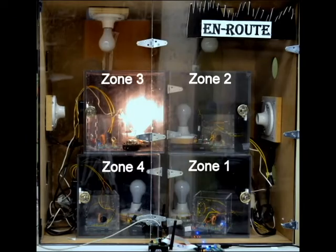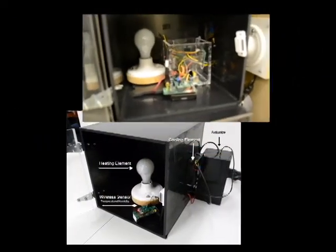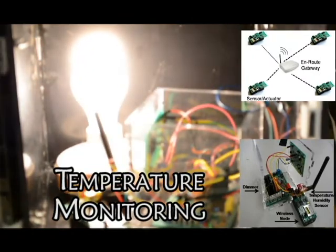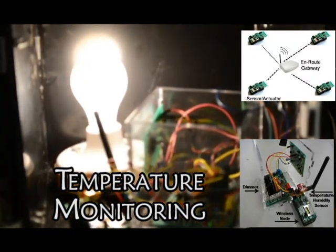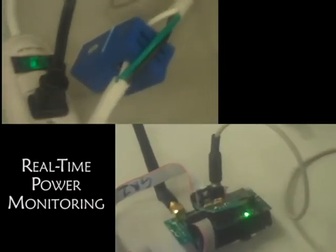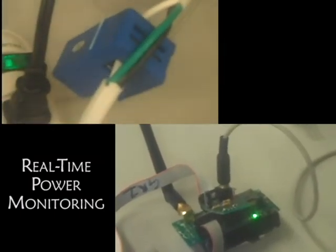The testbed is a scaled model of a building with four zones. Each zone has a heating element and a cooling element. Sensors monitor the temperature level inside each zone in real time and report the data to the gateway, which acts as the energy router. The gateway monitors the total energy consumption of the building using a non-invasive current sensor.